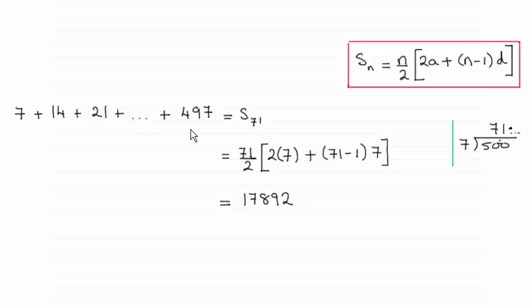I didn't quite know how far to go up, so what I did was I divided 7 into 500 and got 71 point whatever. So I knew that there were 71 terms. So I then did 71 times 7 and that gave me 497.